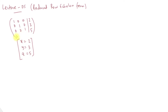If we have our reduced row echelon form, a set of equations has a unique solution.